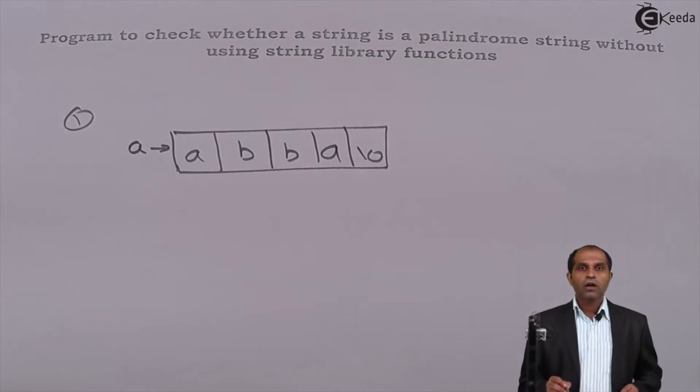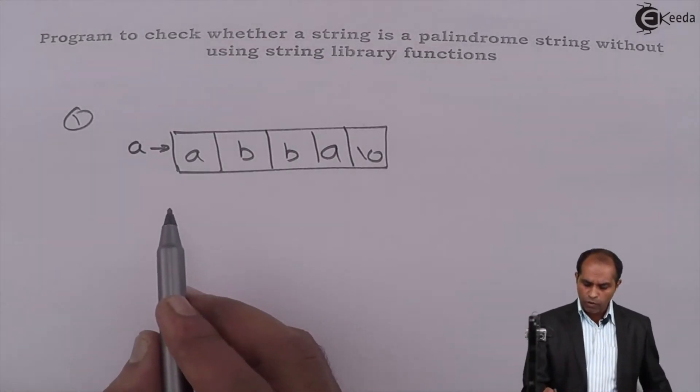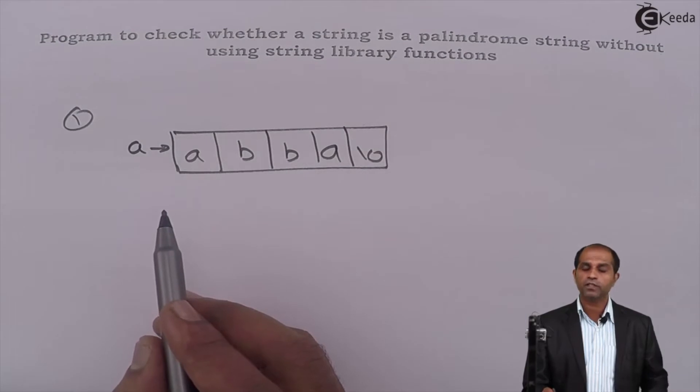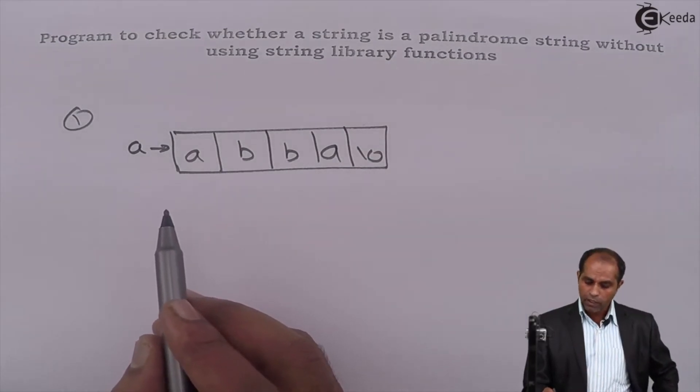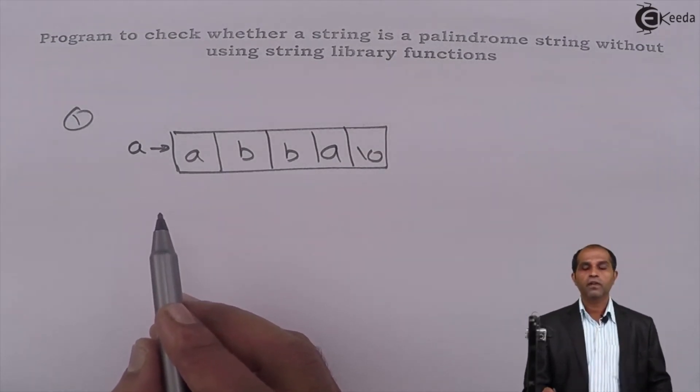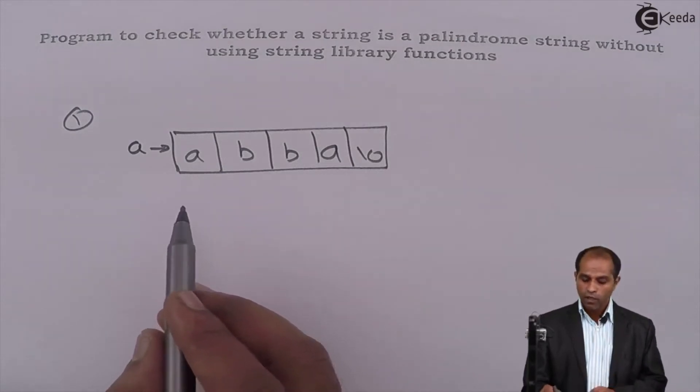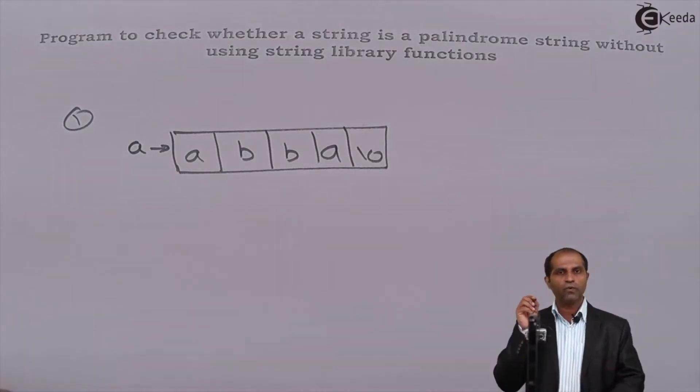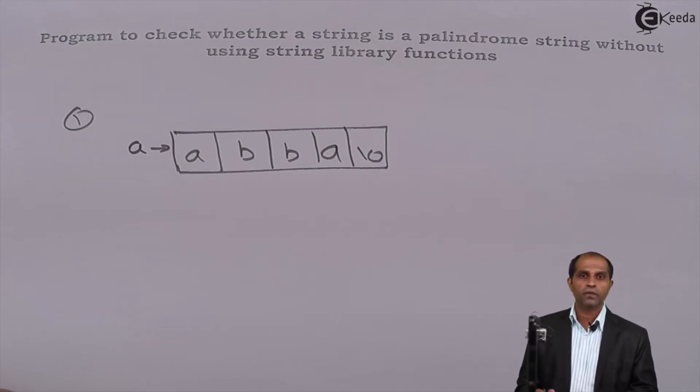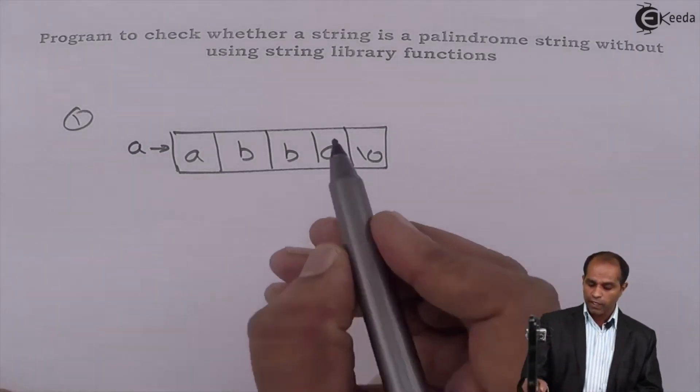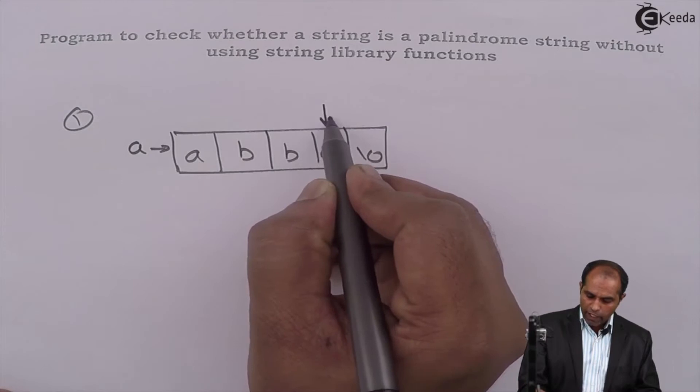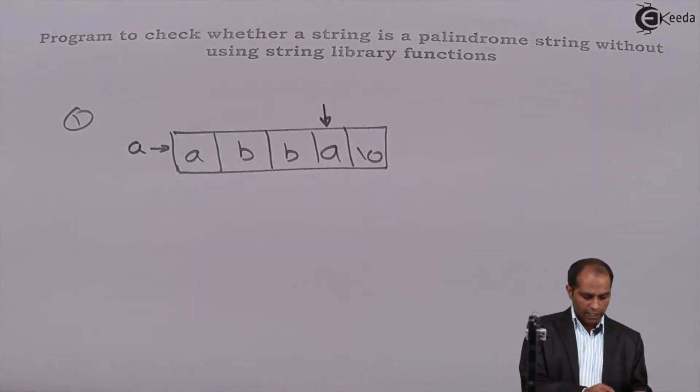Now see, as usual what I need to do is I need to go ahead and check the last character of this particular string. So identify the index of this particular last character. For the index of the last character, an empty for loop which ends with a semicolon is sufficient. Once you identify the index of null character, minus 1 will get to the last character.